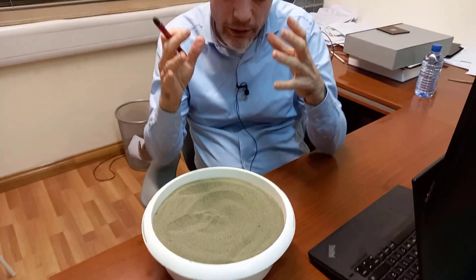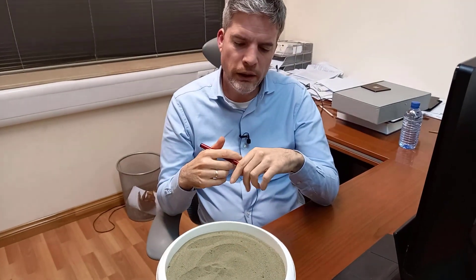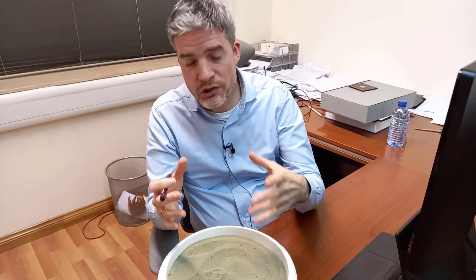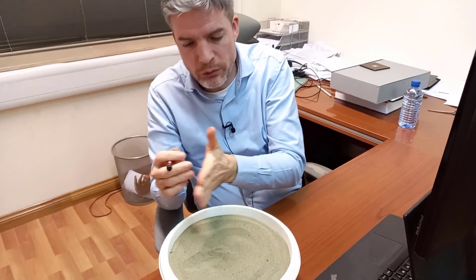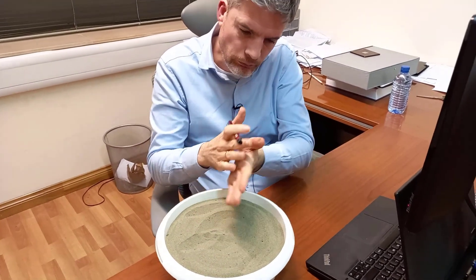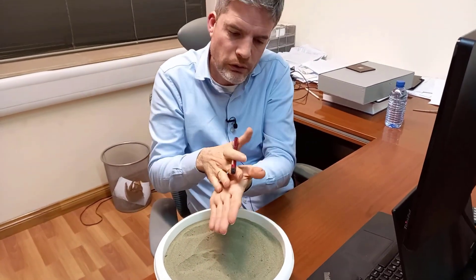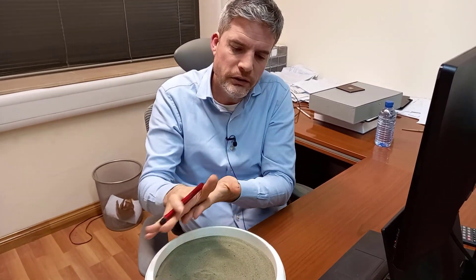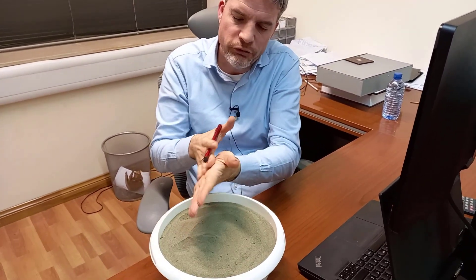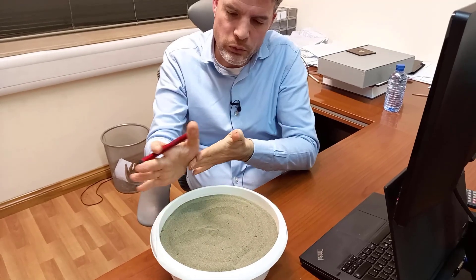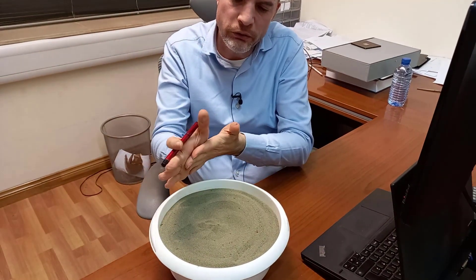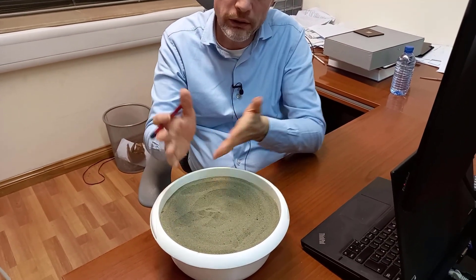So when you apply a load to a soil, eventually it will fail and it will fail by shear, which means that the particles are moving relative to each other. When they move relative to each other they are sliding over each other and that is a shear type of failure. That's why we talk in terms of shear failure or shear strength of soil.